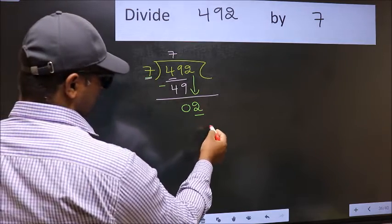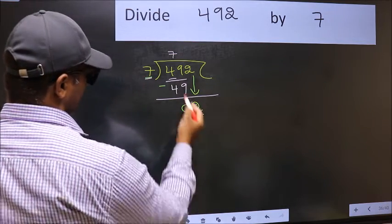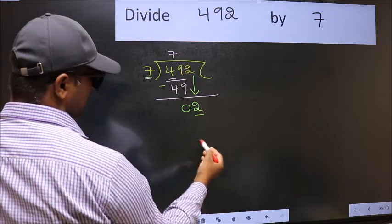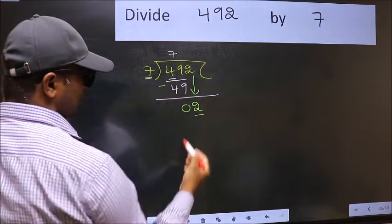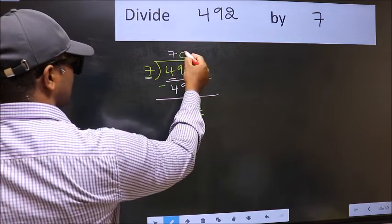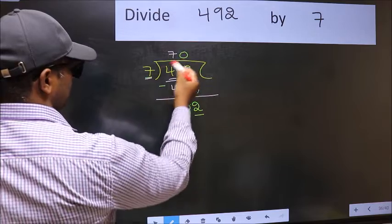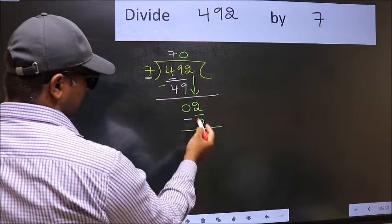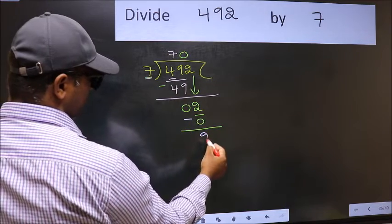If I take 1, we will get 7. But 7 is larger than 2. So what we should do is we should take 0. So 7 into 0, 0. Now you should subtract. 2 minus 0, 2.